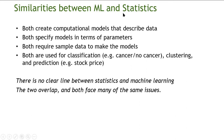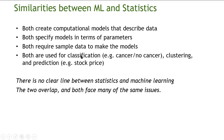Machine learning also creates models, which are more complicated. Both specify models in terms of parameters — in linear regression, the parameters are the slope and the intercept; more complicated models have more parameters. Both machine learning and statistics require sample data to make the models. Both are used for classification, clustering, and prediction.